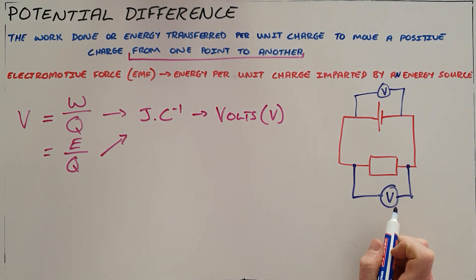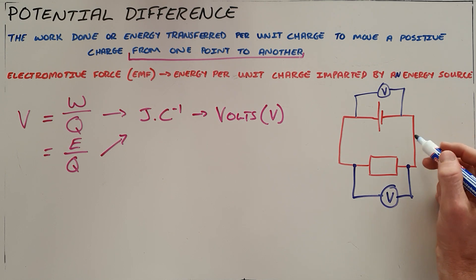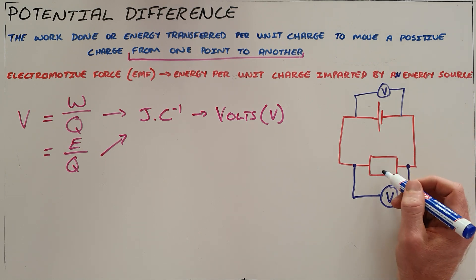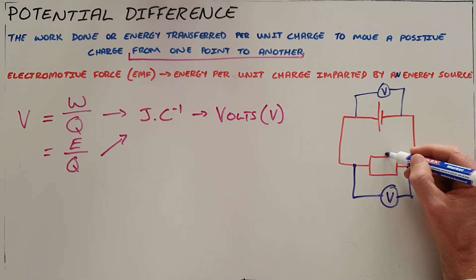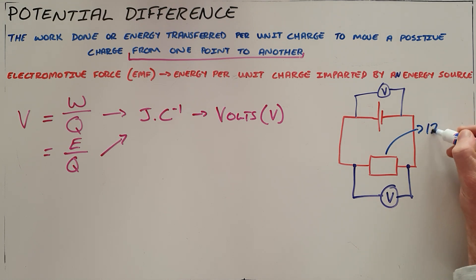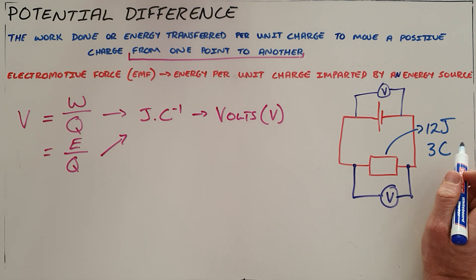A typical question on potential difference would be something along the lines of saying that this resistor over here is found to use 12 joules of energy for every three coulombs of charge, so every three coulombs of charge that moves through there uses up 12 joules of energy.